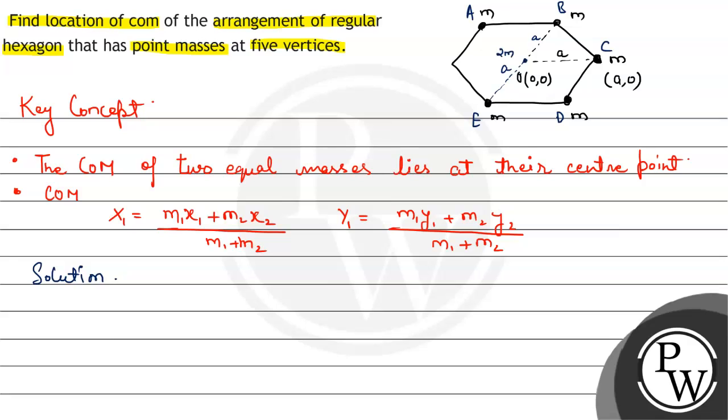Hence here the center of mass 2m will lie. Now again point A and point D have equal distance from point O, hence their center of mass will again lie at O. So the mass at O will come out to be 2m plus 2m because O is center of the center of mass of point AD and BE.